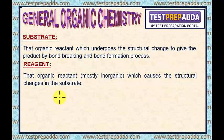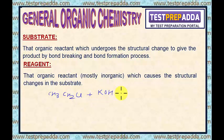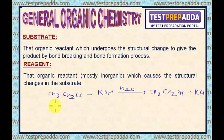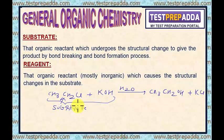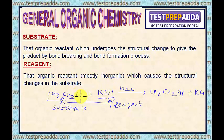I will show you with the same example: CH3CH2Cl plus KOH in H2O giving CH3CH2OH plus KCl. Out of these two reactants, CH3CH2Cl is the substrate and KOH is the reagent. In most cases, the inorganic substance will be the reagent and the carbon compound will be the substrate.